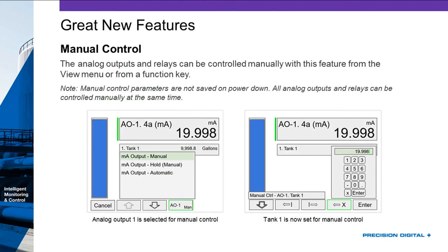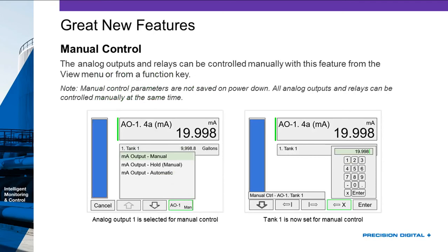Similar to simulate mode, we also have an analog output manual control mode. You can set up your analog outputs to have a button at the bottom of the screen — press it and you get to type in whatever you'd like that analog output to be set to. This is useful for testing systems. Maybe I want to simulate where it can trigger high and low alarms, but I also want to test another part of my system — I can use this to change the 4-20mA output to be whatever I'd like.